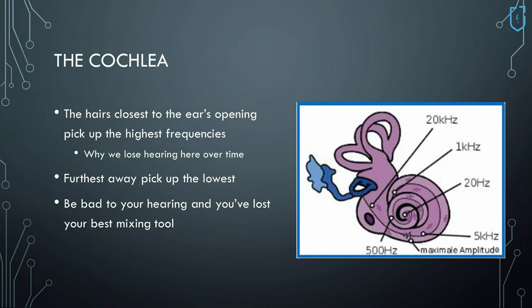The hairs closest to the ear's opening pick up the highest frequencies — it's why they're the first ones to go, as they get the most abuse. Lower frequencies have a longer wavelength, so they have more time to travel and develop, and that's how you pick those up. It's also one reason we're less sensitive to lower frequencies — they have to travel further into the ear.